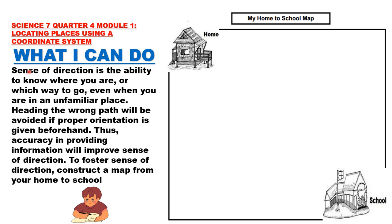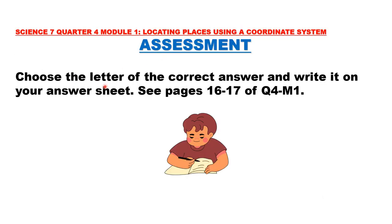What I Can Do: Sense of direction is the ability to know where you are or which way to go even when you are in an unfamiliar place. Heading the wrong path will be avoided if proper orientation is given beforehand. Accuracy in providing information will improve sense of direction. To foster sense of direction, construct a map from your home to school. Assessment: Choose the letter of the correct answer and write it on your answer sheet. See pages 16 to 17 of Quarter 4, Module 1.